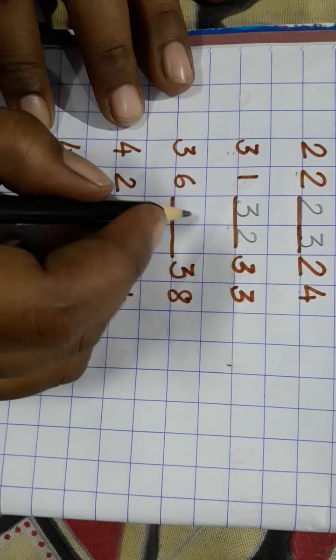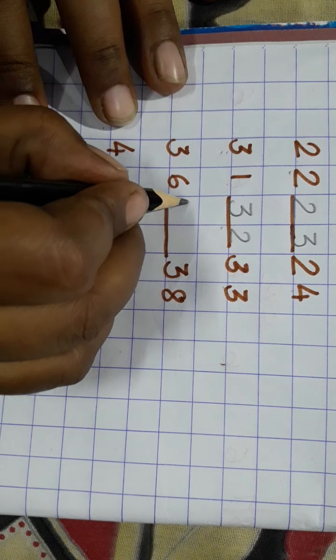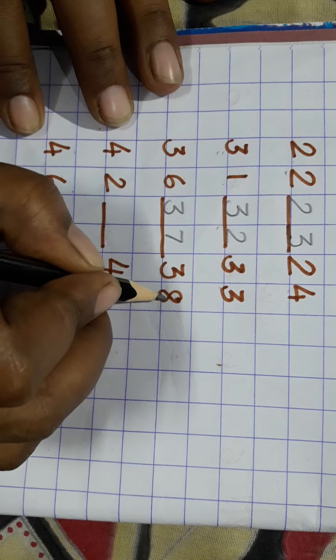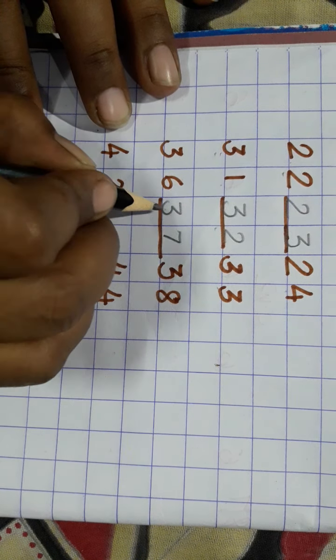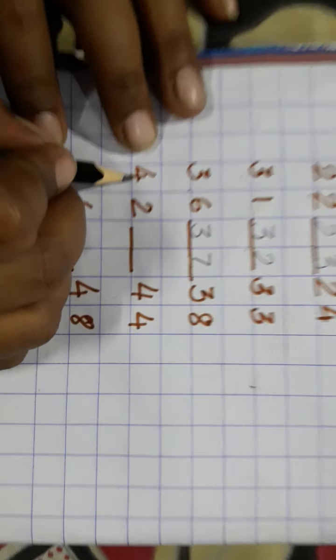36. What comes after 36? 37. What comes before 38? 37. 36, 37, 38. 42.